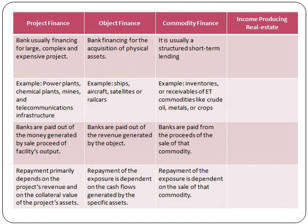These types of structures are designed to compensate for the weak credit quality of the borrower, and such structures reflect the lender's skill in structuring the transaction rather than the credit quality of the borrower. Again, like object finance, if the borrower's financial condition and debt servicing capacity enable repayment without undue reliance on the specific commodity, then that structure will be treated as a collateralized corporate exposure.